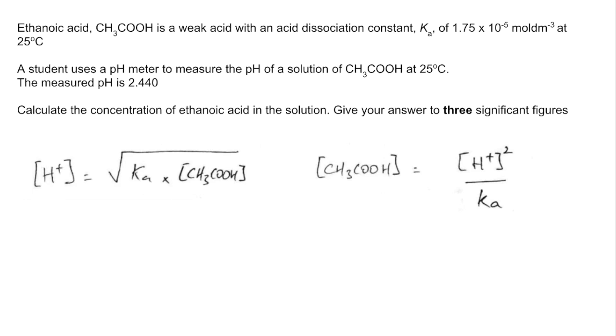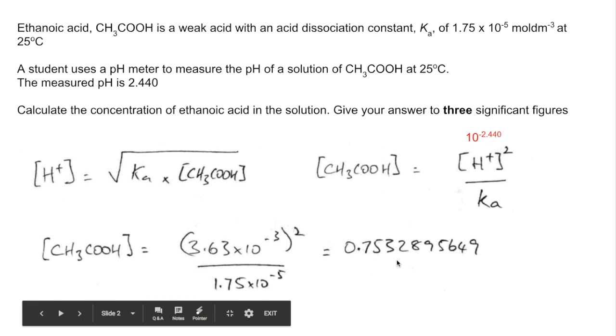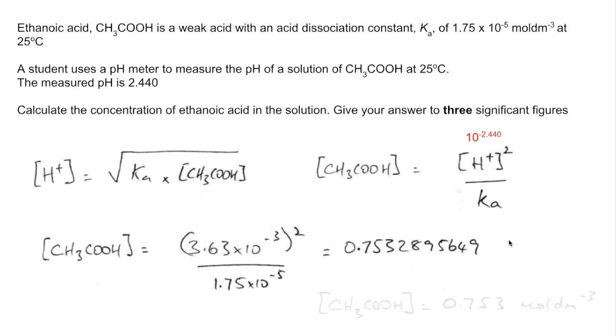We've been given the pH 2.440, so we need to turn that into an H plus concentration. That's 10 to the minus 2.440. If we substitute the answer to that in the expression we've just got, we get that there. The concentration of the ethanoic acid is coming out at this calculator value here, which to three significant figures is 0.753 moles per decimetre cubed.